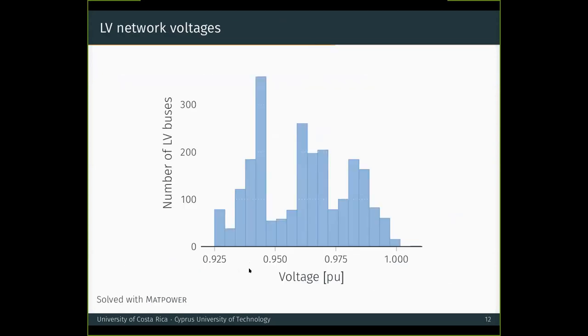These are the voltages that we obtained in the low voltage networks. In order to ensure a diverse voltage profile, we set the lower bound of the optimization problem to 0.925 per unit.